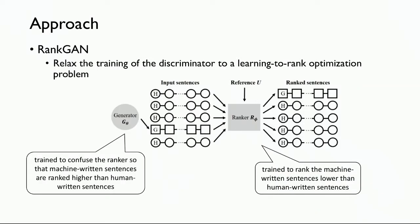This paper proposes RankGAN, which learns to rank a list of sentences. The generator generates a sentence, and the ranker receives a list of sentences — both the generated sentences and a list of human-written sentences. The ranker is trained to sort the sentences, and the generator tries to confuse the ranker so that machine-written sentences are ranked higher than human-written ones.